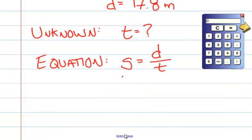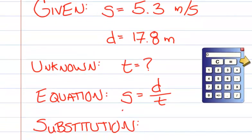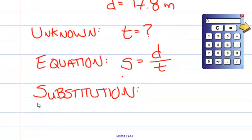Given unknown equation, the next step is substitution. So we're going to take the information that we know and substitute it into that equation.